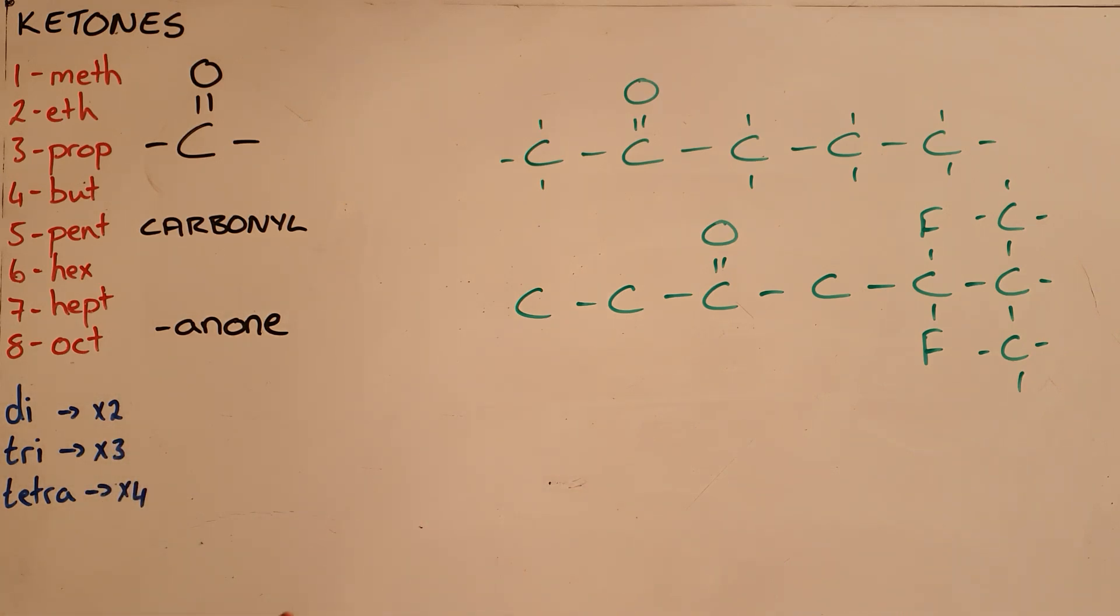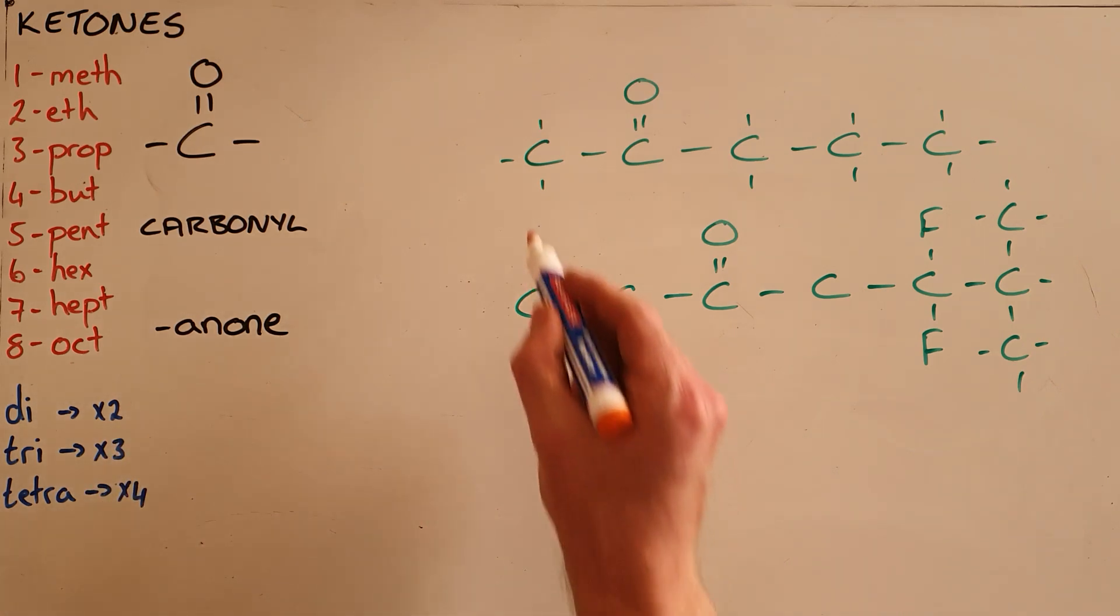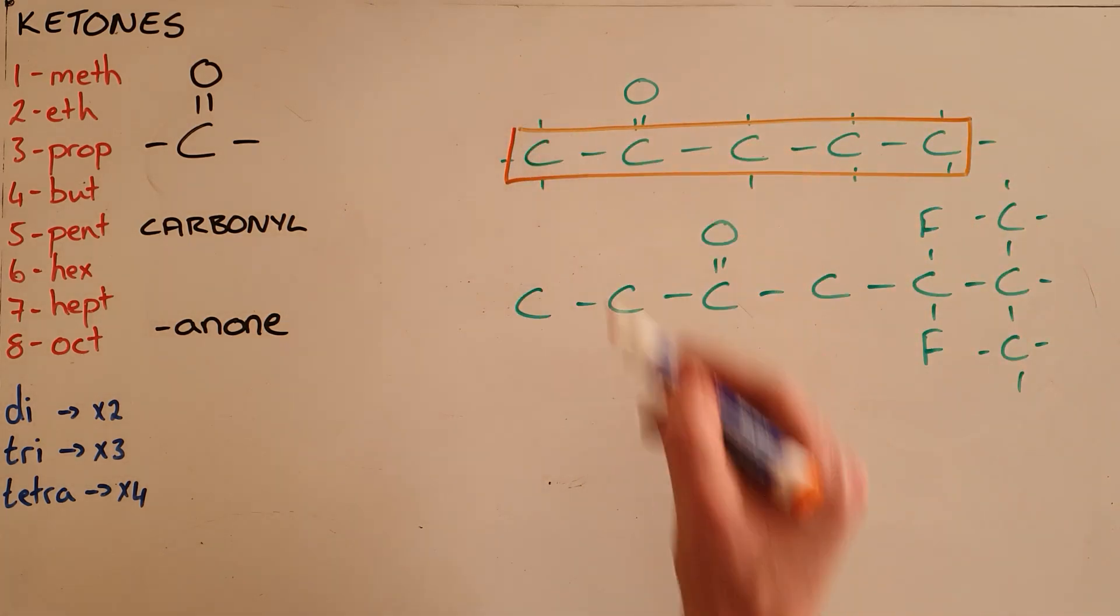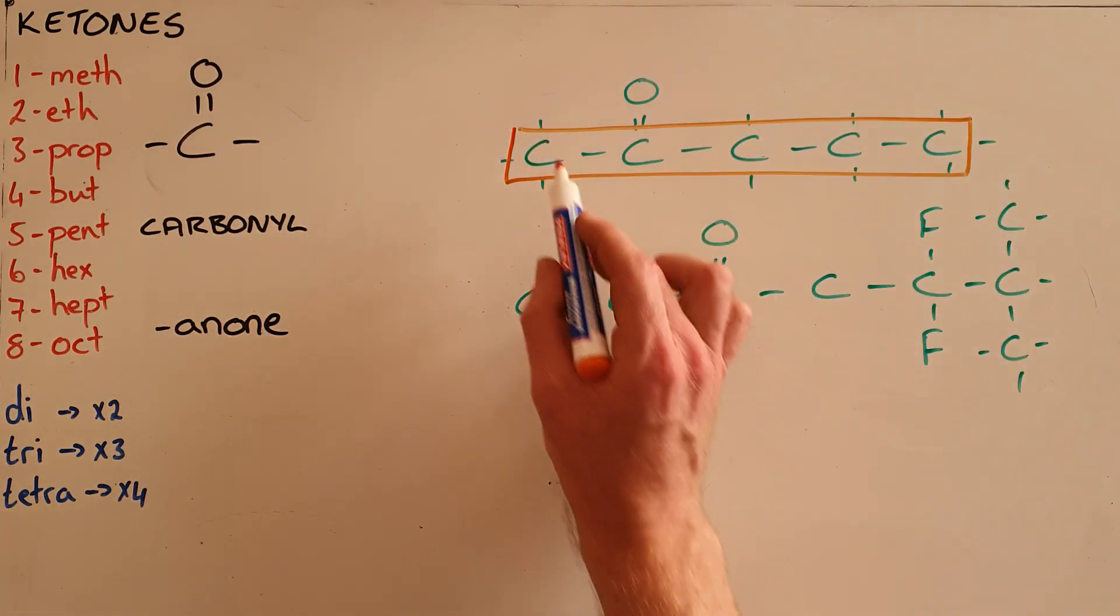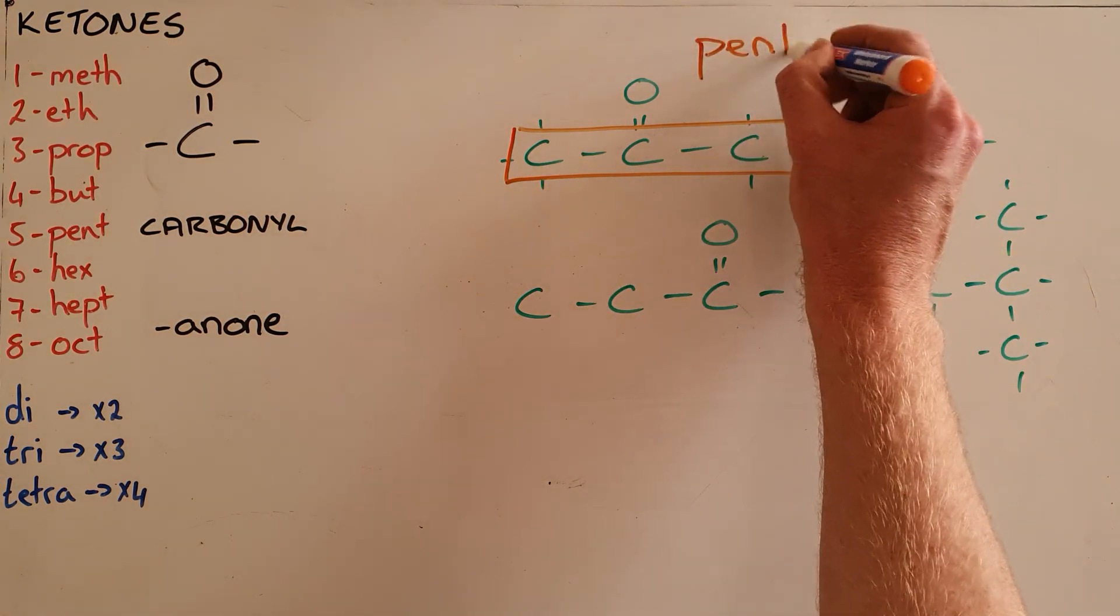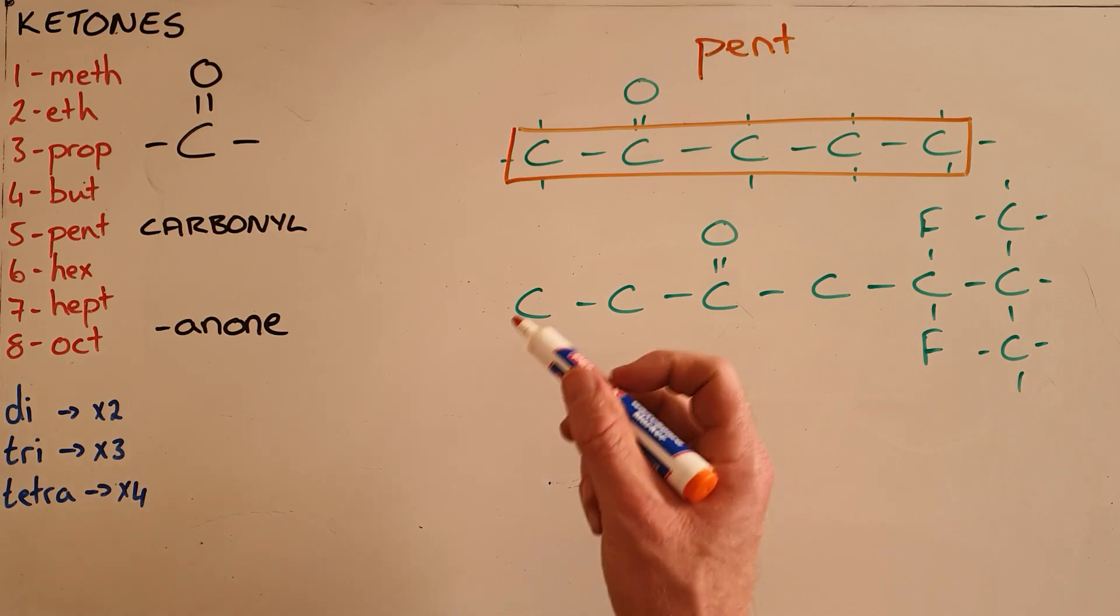The same naming conventions apply where we start by identifying the longest chain that contains that functional group. In this case, that is five carbons, and therefore this is pent, and it would be pentanone.